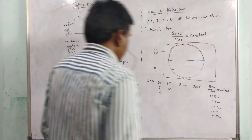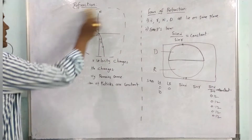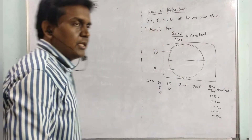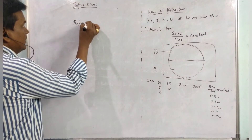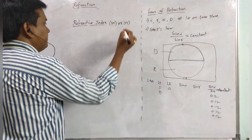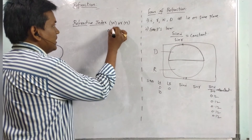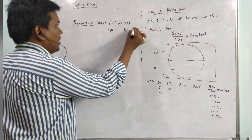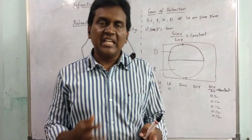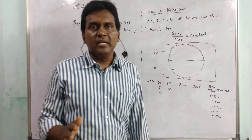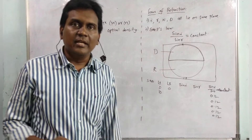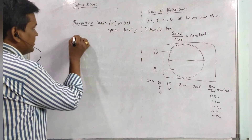Next, we consider the refractive index. In one word, the refractive index is nothing but the optical density. It is indicated with the letter mu or n. To define it: refractive index is the ratio of the speed of light in different mediums. The speed of light is not the same in all mediums — it changes with respect to the medium. Refractive index is divided into two types: absolute refractive index and relative refractive index.